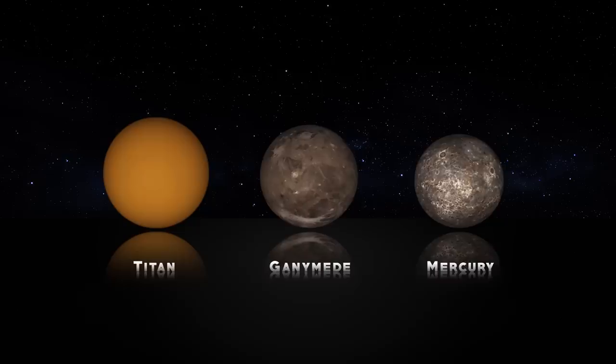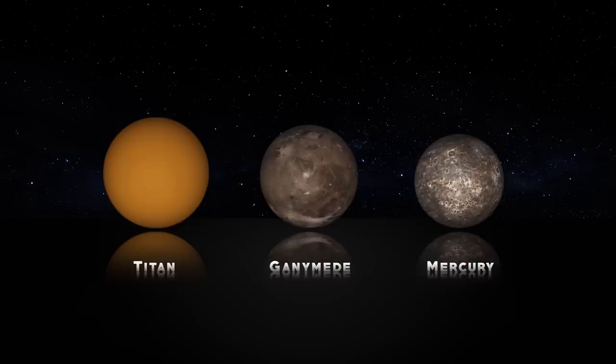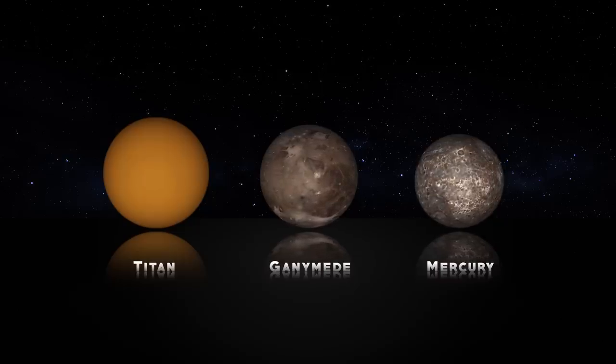Even Mercury has a diameter smaller than Titan, however Mercury is denser than both Titan and Ganymede combined.